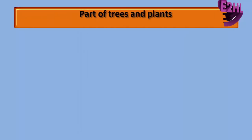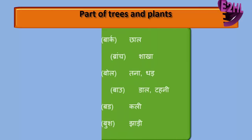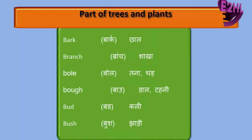Part of Trees and Plants: Bark — Jhal. Branch — Sakha. Bole — Tanayadhar. Bough — Dahlia Tally. Bud — Kali.